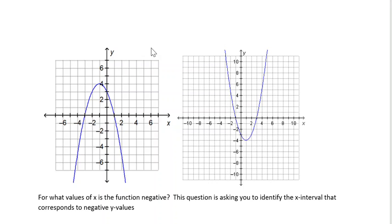Whereas when we talk about the function's rate of change increasing versus the function's rate of change decreasing, that's a little different. So here it's just asking what values of x make the function negative — we're looking for those negative y values.